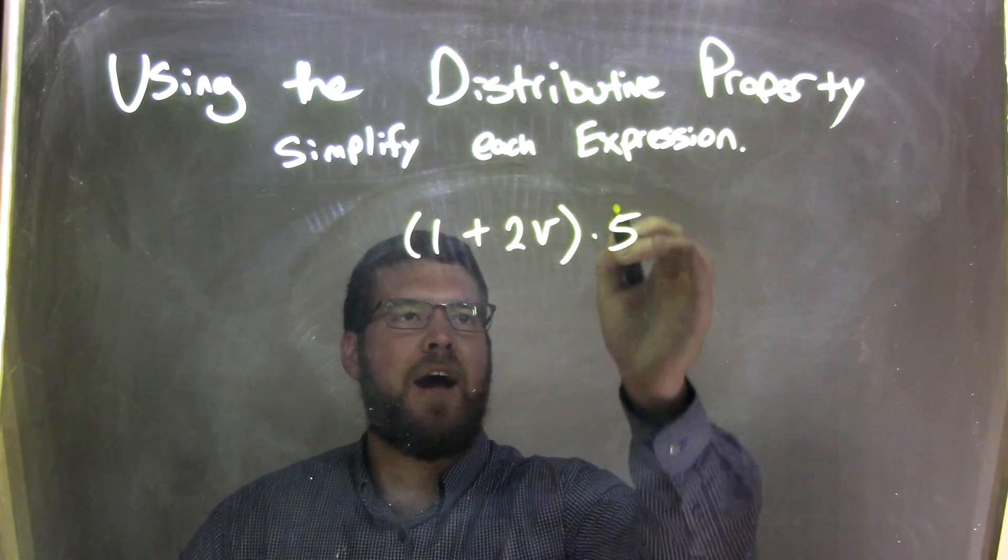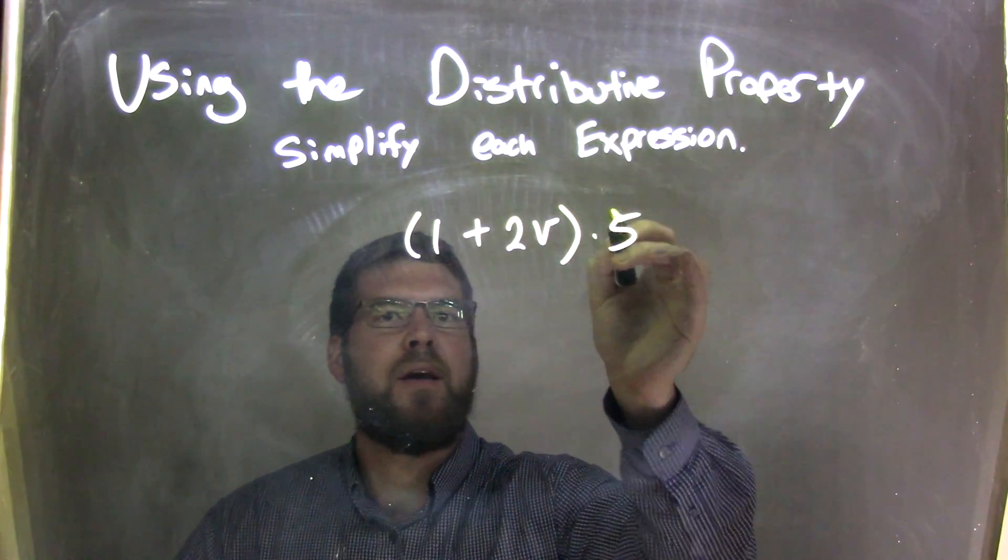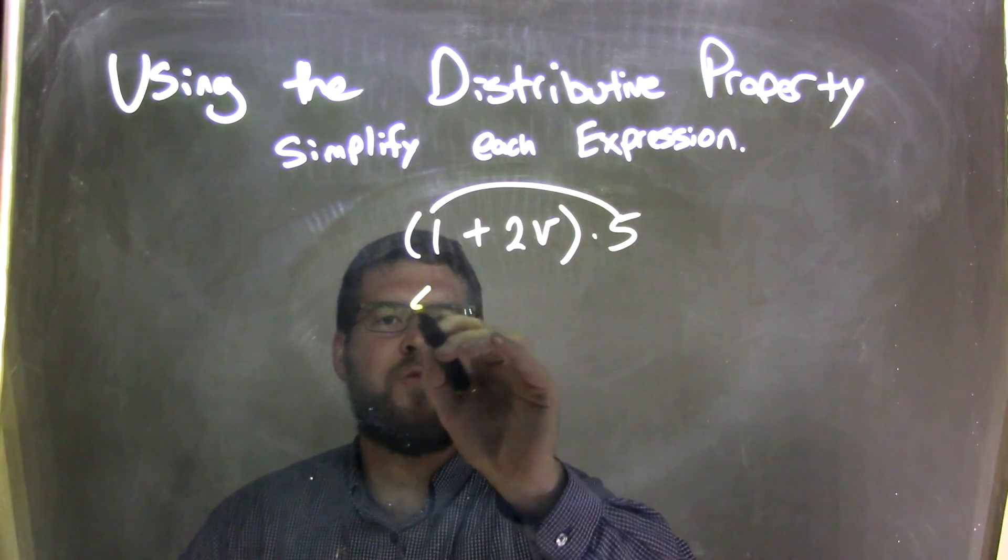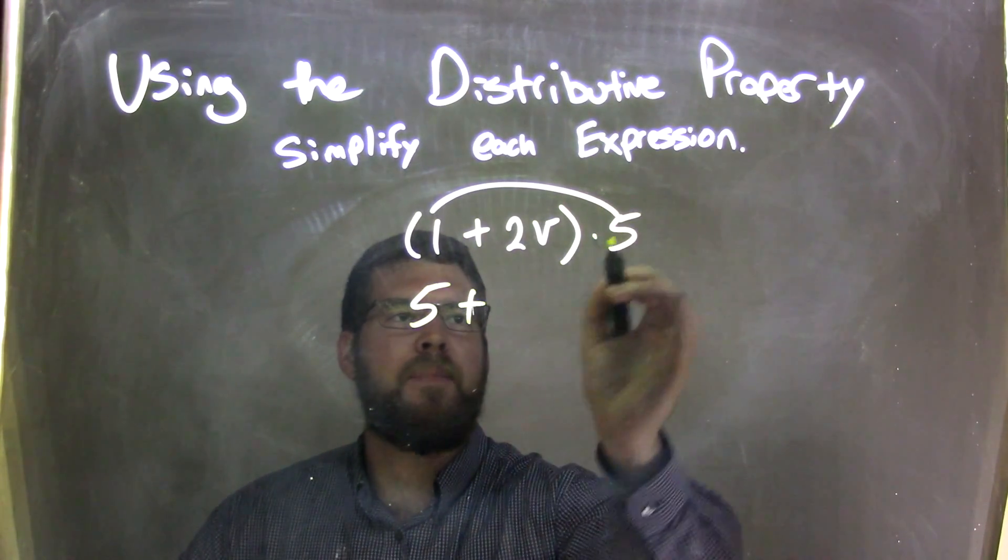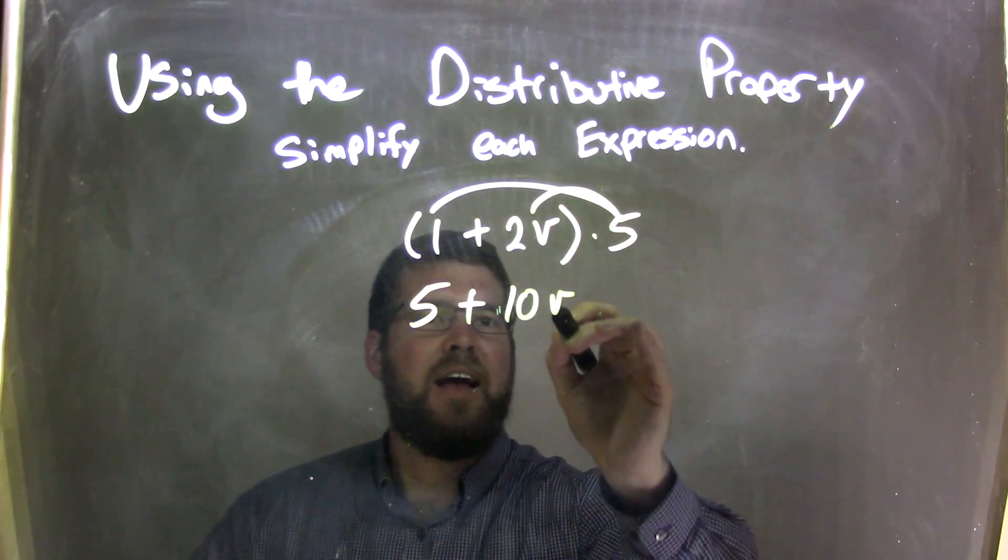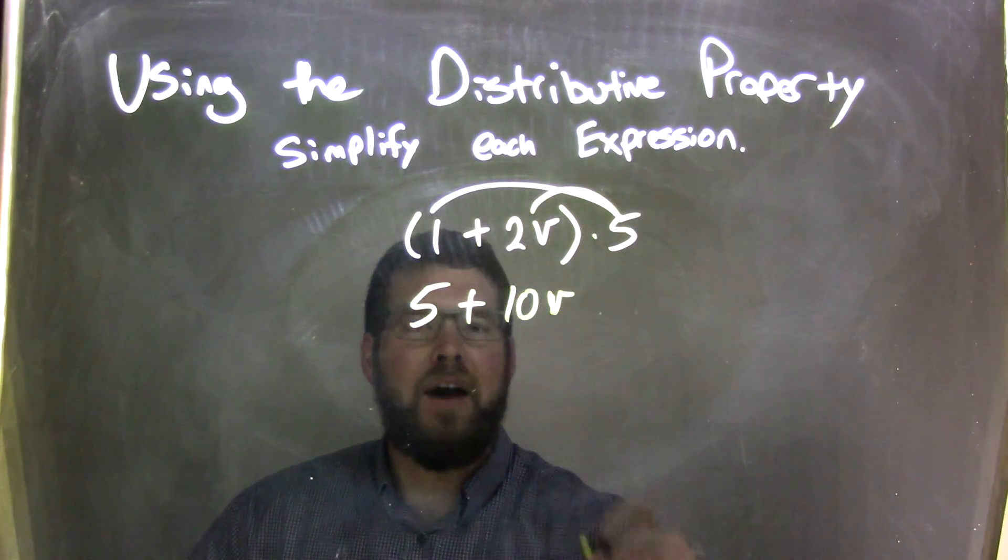So we take the times 5 and we have to distribute that back in. 5 times 1, or 1 times 5 in a sense, is 5. Bring down the plus sign. 5 times 2V is 10V, and that is our final answer.